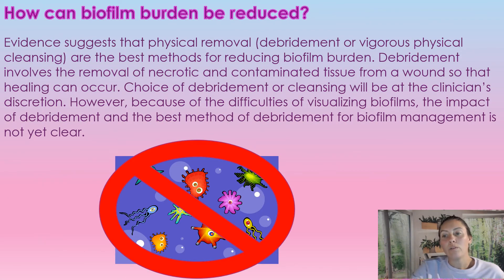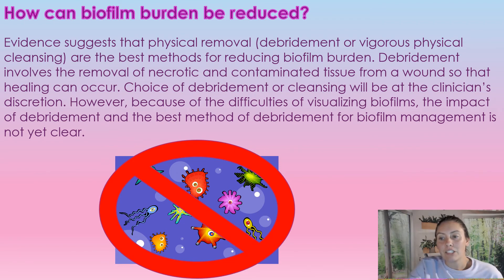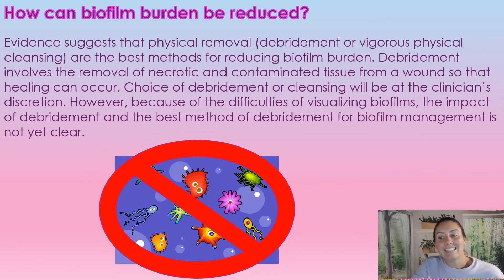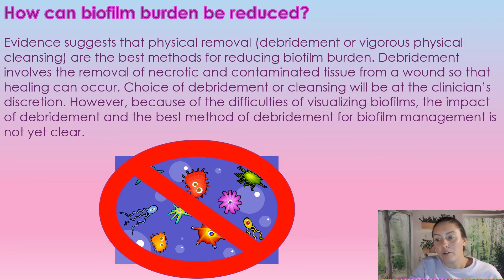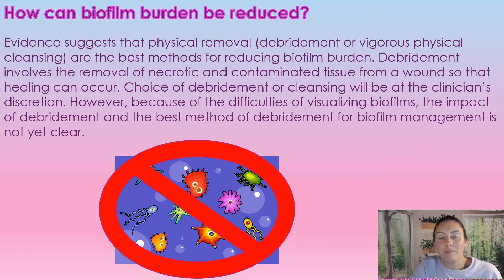How can we reduce the biofilm burden on the wound? Evidence suggests that physical removal — either debridement or vigorous physical cleaning — are the best methods for reducing the biofilm. Debridement involves the removal of necrotic and contaminated tissue from a wound so that healing can occur. The choice of debridement or cleansing is going to be at the clinician's discretion. However, because of the difficulties in visualizing biofilms, the impact of debridement and the best method of debridement for a biofilm is not entirely clear.